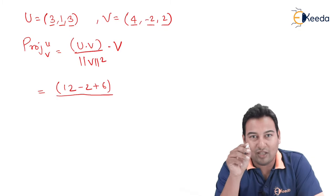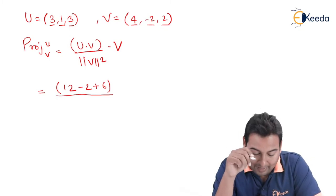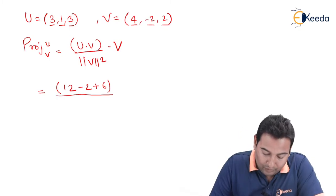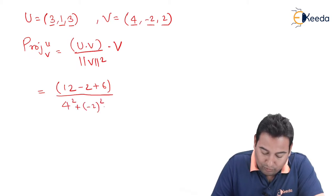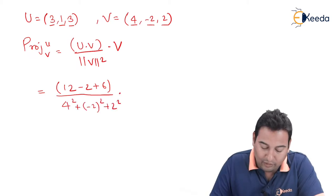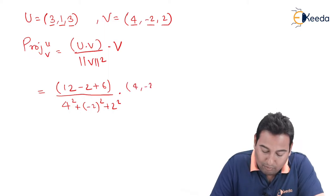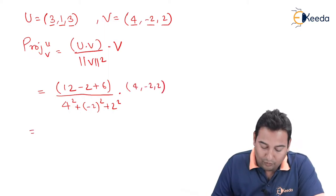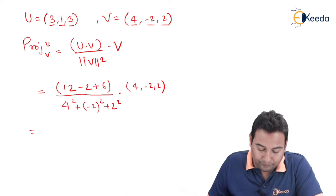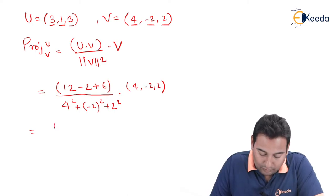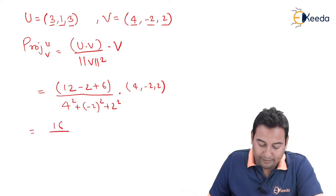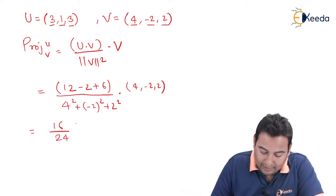Norm means square root and the whole square, so square root and square will be cancelled. We'll get 4 squared plus minus 2 squared plus 2 squared. And here it will be v, v is (4,-2,2), which will be equal to 16 divided by 24.